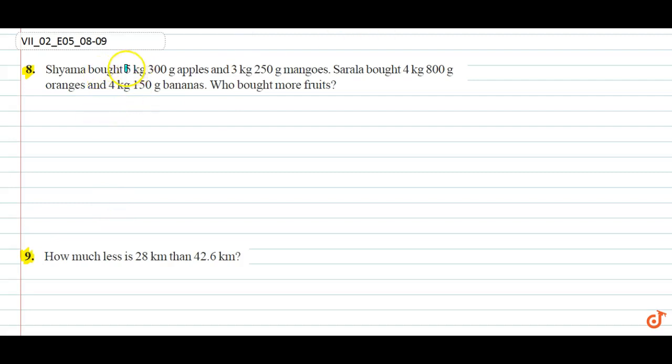Shyam bought 5 kg and 300 gram apples and 3 kg 250 gram mangoes. Sarlah brought 4 kg 800 gram oranges and 4 kg 150 gram bananas. Who bought more fruits?